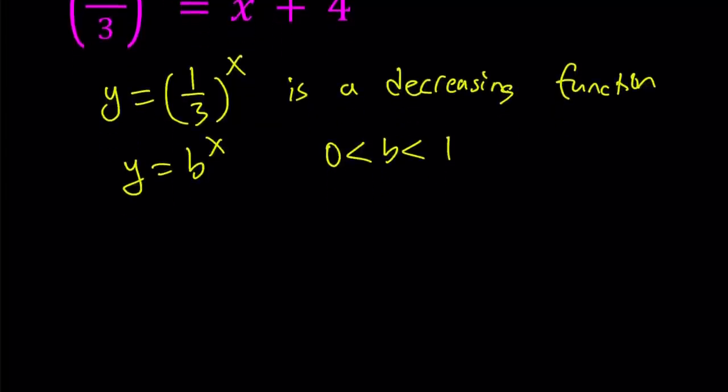Either b is between 0 and 1 or b is greater than 1. In this case, our b is 1 third which falls in this interval. The graph is going to look like roughly something like this. As x approaches infinity, y is going to approach 0. As x approaches negative infinity, y is going to approach positive infinity. And it has a y-intercept at 0, 1 and no x-intercept because of the asymptote.